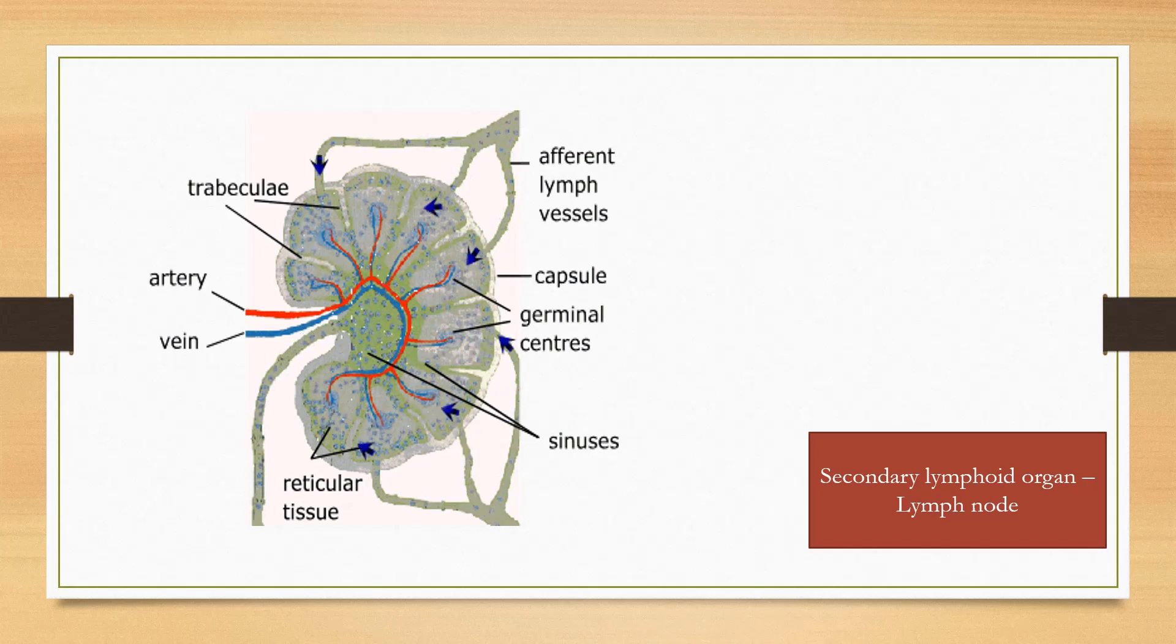On immune response, primary follicle is converted to secondary follicle. Antibodies generated in the secondary follicle move to the medulla. Thus, the antigens are actively removed by the lymph node.